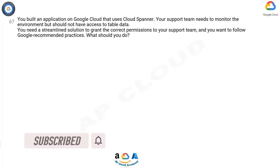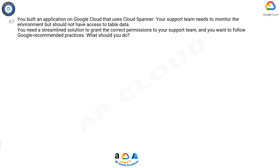You built an application on Google Cloud that uses Cloud Spanner. Your support team needs to monitor the environment but should not have access to table data. You need a streamlined solution to grant the correct permissions to your support team, and you want to follow Google recommended practices. What should you do?